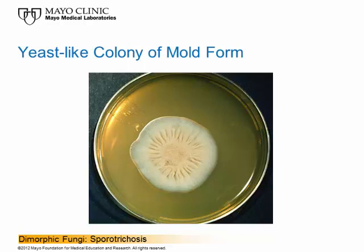This image shows a yeast-like colony of the mold form of Sporothrix. You see this pretty often with this organism — it starts to grow and you think you're working with a yeast. In fact, you can actually develop an API profile using the yeast API AUX system, and you can get a profile number for this organism because it looks like a yeast when it starts off.